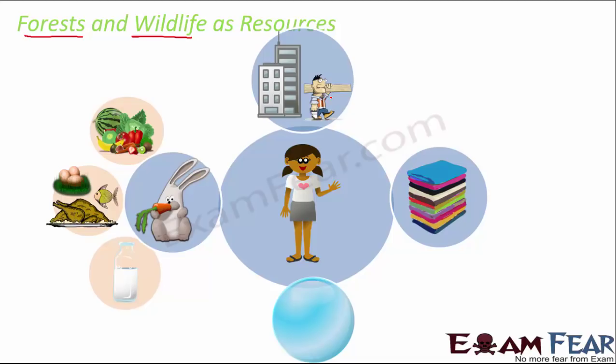Clothes that we wear are either made of cotton or jute, which are obtained from plants, or they could be made of silk, which is obtained from the silkworm — an animal. These are just a few of the things from which we benefit from forests and wildlife. Undoubtedly, forests and wildlife are excellent resources, and that is why it is important that we take care of, protect, and preserve them.